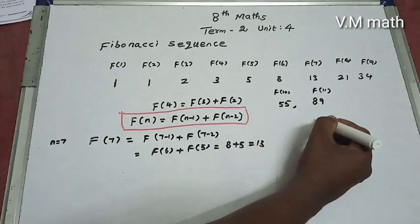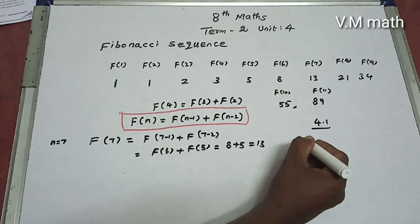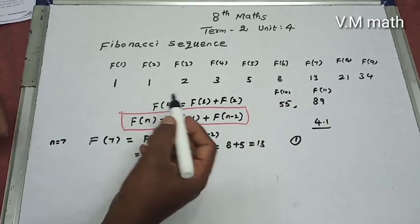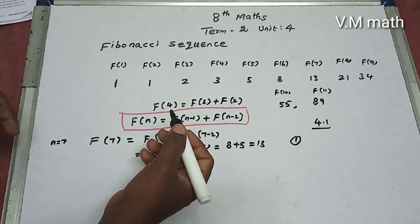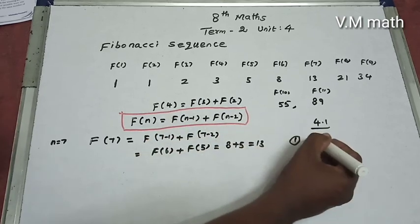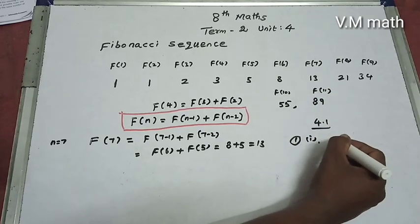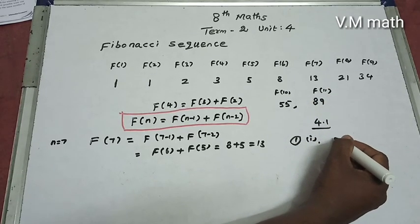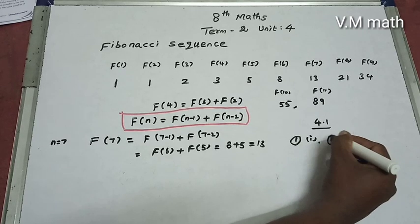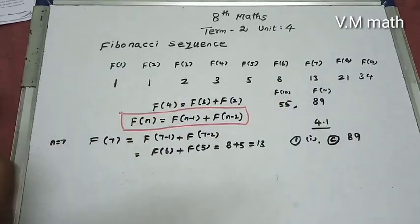First question: What is the 11th Fibonacci number? The answer is 89, which is option C.